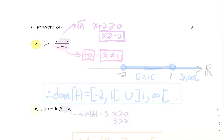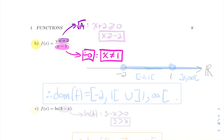Next example: f(x) = √(x+2) / (x−1). We have x−1 in the denominator, which is a division by zero problem — we just did that. So x cannot equal one. What's new now is the square root of x+2. This is a root-of-a problem where a is x+2, so we need x+2 to be greater than or equal to zero, meaning x must be greater than or equal to minus two.